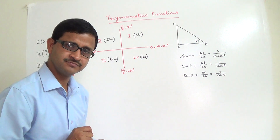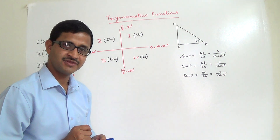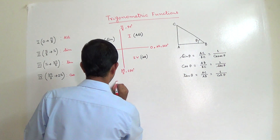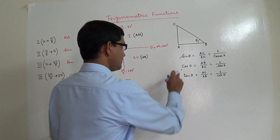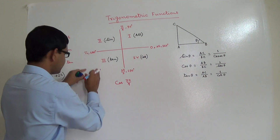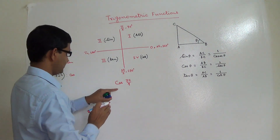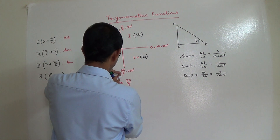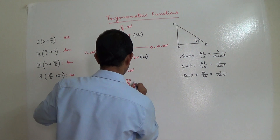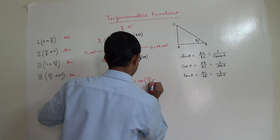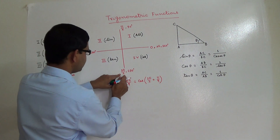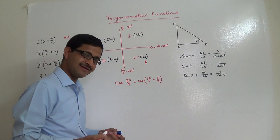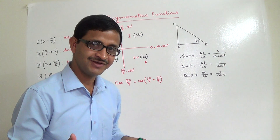Now, if someone asks: what is the value of cos(7π/4)? We determine which quadrant it falls in. Since 7π/4 = 3π/2 + π/4, it is in the fourth quadrant. We know that in the fourth quadrant, cos is positive. So we can directly say the value of cos(7π/4) is positive. The exact value we will find after some time.